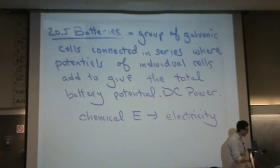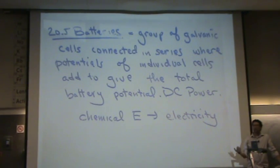A battery is whenever you have galvanic cells, those are electrochemical cells we've been working with. Usually what happens is you put those in series to increase the voltage. The potentials or voltages of individual cells will add to give more total power or total potential. This is DC power as in contrast to AC power. We're taking chemical energy, chemical reactions, and converting that to electricity.